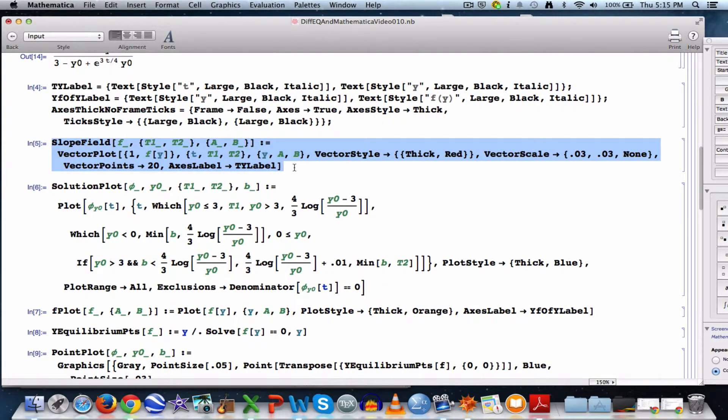This is code that creates a function that I'm calling slope field. What does slope field have for its inputs? It has the function on the right-hand side, the f of y in this case, has the t interval and the y interval, and then uses vector plot, which is a built-in Mathematica function, to create the slope field. Slope field is not a built-in Mathematica function. I'm creating my own Mathematica function there.